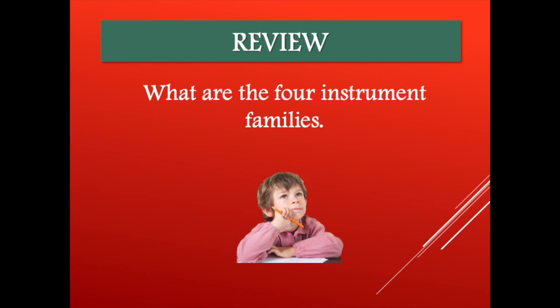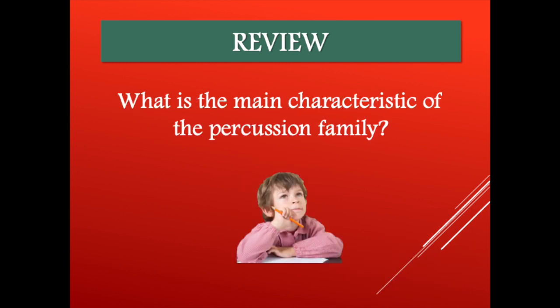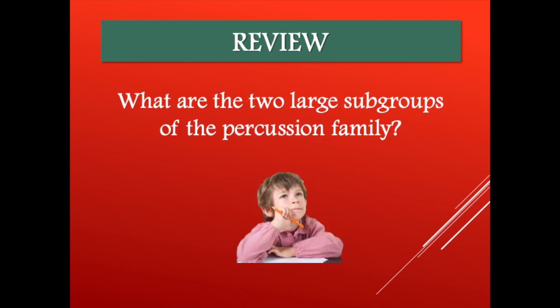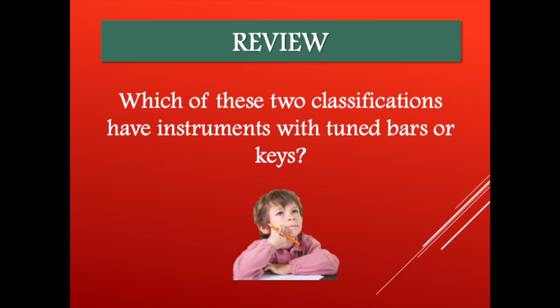Now let's review what we've learned today. What are the four instrument families? The four instrument families are string, brass, woodwind, and percussion. What is the characteristic of the percussion family? Someone or something needs to hit the instrument to make a sound. What are the two large subgroups of the percussion family? They are either classified as pitched or unpitched percussion instruments. Which of these two classifications have instruments with tuned bars or keys? Any instrument with tuned bars or keys are pitched instruments.